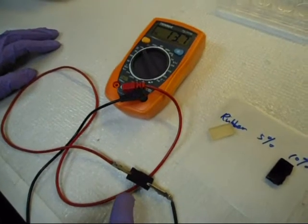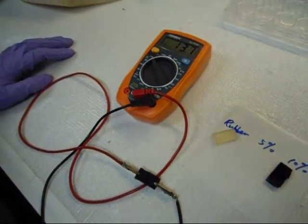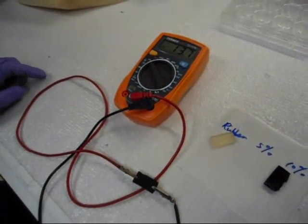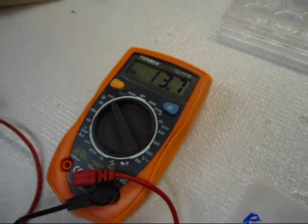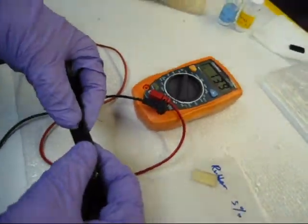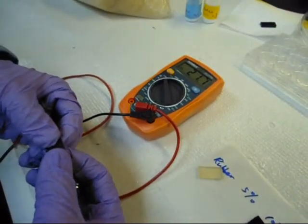This is a conducting rubber bar which contains 5 weight percent of graphite. As we can see, if we don't apply any force to it, its resistance is about 14 kilo-ohms. Now, we are going to apply some force into it. We can see its resistance largely increase.